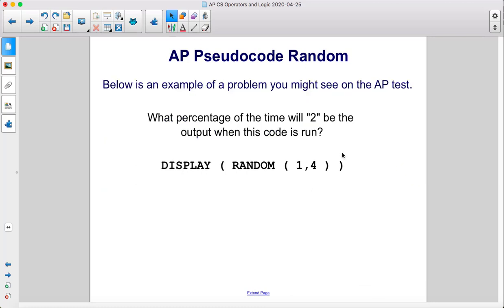Below is an example of a problem you might see on the AP test. What percentage of the time will 2 be the output when this code is run?